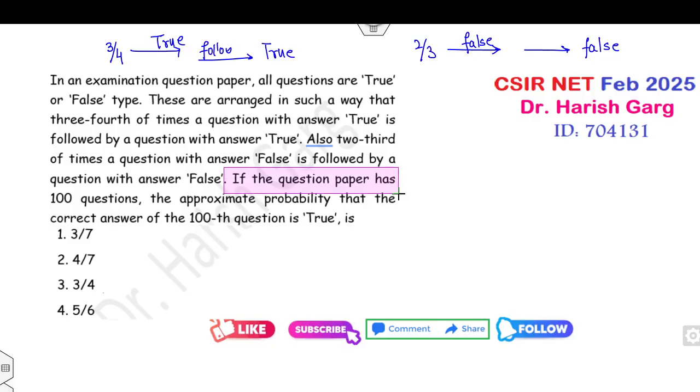If the question paper has 100 questions, find the approximate probability that the correct answer of the 100th question is true. You have 100 questions in the paper, and your target is to find that this one will be true.